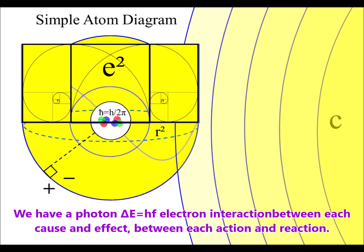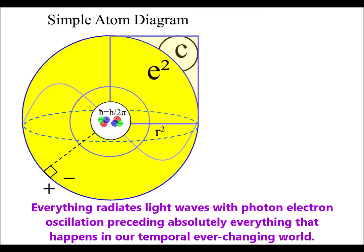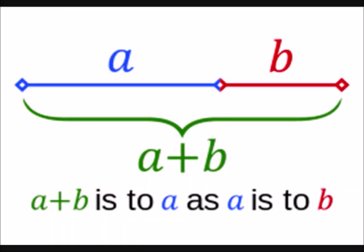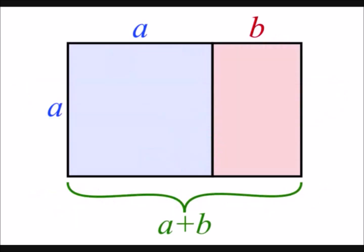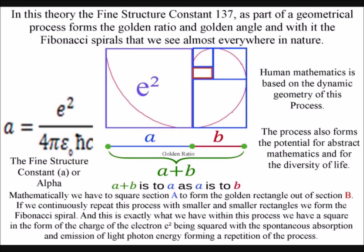We then have a golden rectangle on each side of the square relative to the spherical surface. In this way, the absorption and emission of light photon energy forms the A and B of the golden ratio. Mathematically, we have to square section A to form the golden rectangle out of section B. Energy levels continuously cascading down will repeat this process with smaller and smaller rectangles forming the Fibonacci spiral.